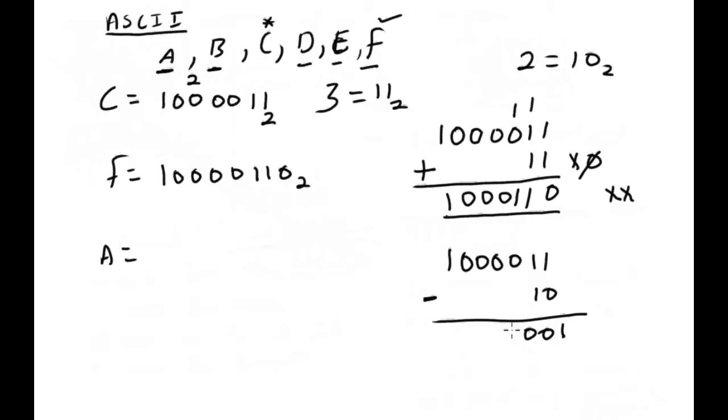1 minus 0 is 1. 1 minus 1 is 0. And I just bring down the others. 0, 0, 0, 0, 1. So this would be A.